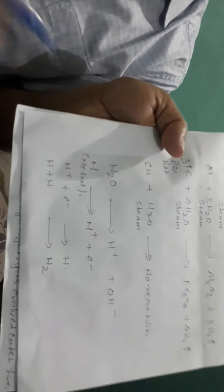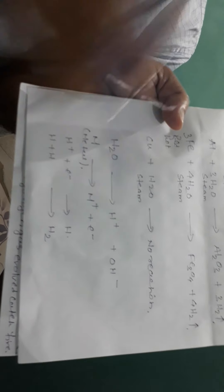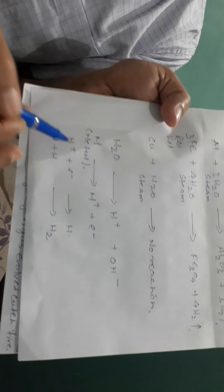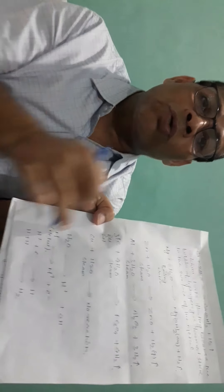First of all, water is a weak electrolyte, so it slightly ionizes into H⁺ and OH⁻. The metal loses one electron and forms M⁺ and an electron. This electron is received by the hydrogen ion, which converts into a hydrogen atom. Since hydrogen atoms cannot exist alone in nature, they immediately combine to form hydrogen gas. The metal which is able to lose electrons can undergo this reaction — otherwise it cannot. The same mechanism applies to reactions with acid, as discussed in the acid chapter. Thank you, have a nice day.